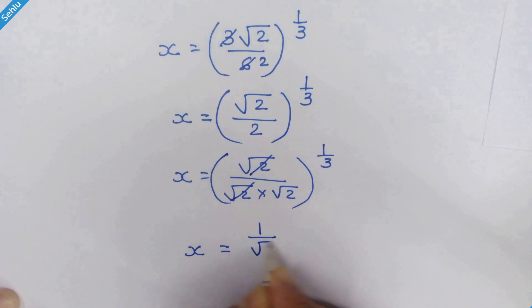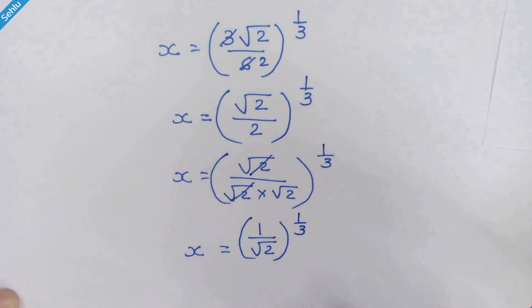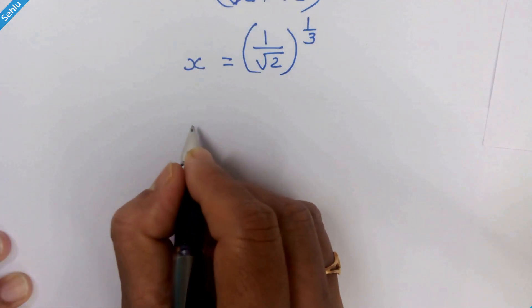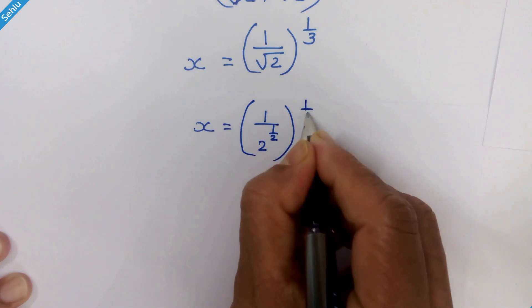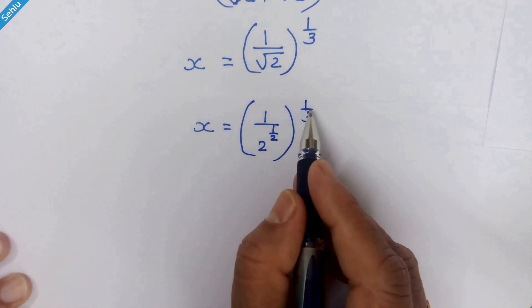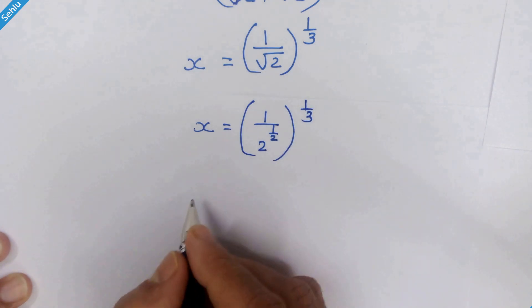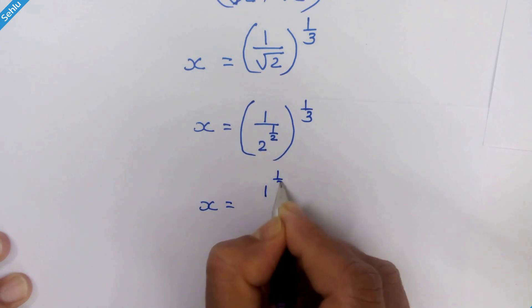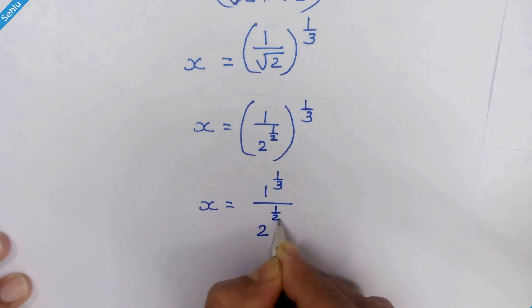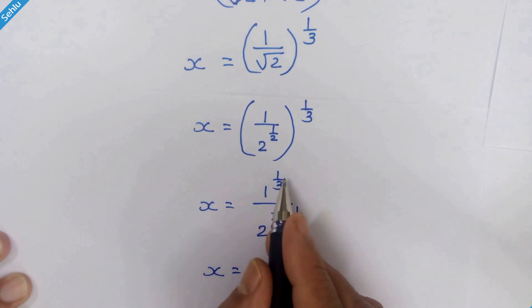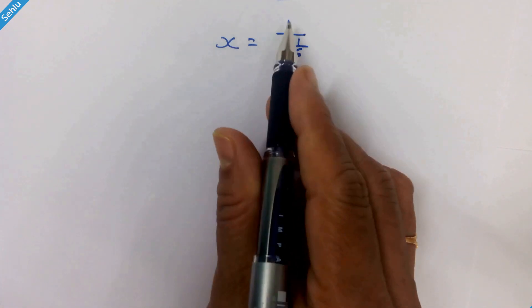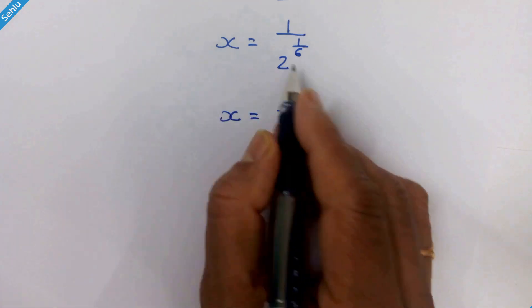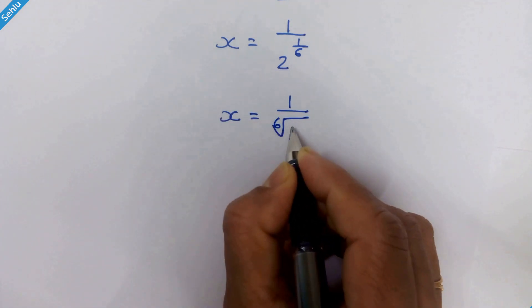Now, √2 can be written as 2^(1/2), so we have x = (1 / 2^(1/2)) raised to 1/3. This exponent 1/3 applies to both the numerator and denominator: 1^(1/3) upon 2^(1/2 × 1/3). Since 1^(1/3) = 1 and 1/2 × 1/3 = 1/6, we get x = 1 / 2^(1/6). And 2^(1/6) can be written as the 6th root of 2, so x = 1 / ⁶√2.